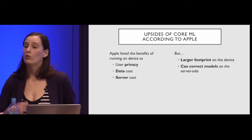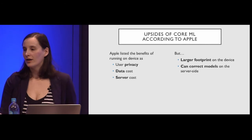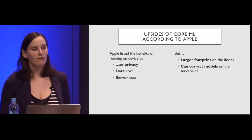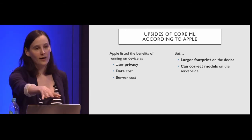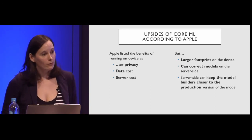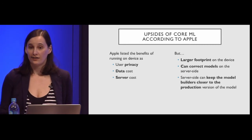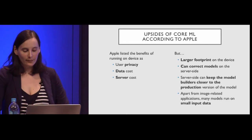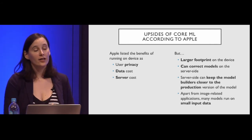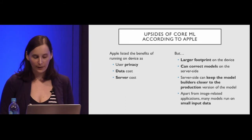But you can't correct models as you watch how they're behaving in the way server-side approaches allow. Data scientists refine their models by looking at input, figuring out if predictions were right, and understanding how new uses differ from training data. You can't really do that following the classic CoreML paradigm. Server side also keeps the model builders closer to the production version. Apart from image-related applications, many models run on small input data, and there are good reasons to argue for sending it to your server where people can keep an eye on it and refine on the go.